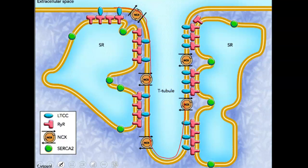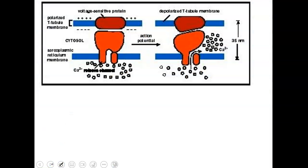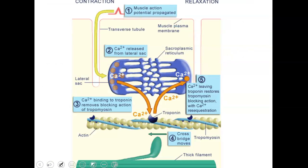Looking at another diagram showing the T-tubule with the sarcoplasmic reticulum going around it and diving deep. The zippered proteins — shown in blue — react with calcium. As the positive charge flows into the T-tubule, those zippered proteins attached to the calcium channels change shape, allowing calcium to flood into the myofibril. This causes that calcium to change the troponin and move it, so the head of the thick filament can attach to the thin filament.